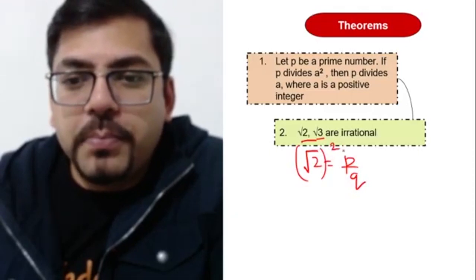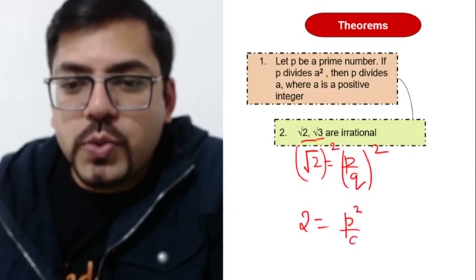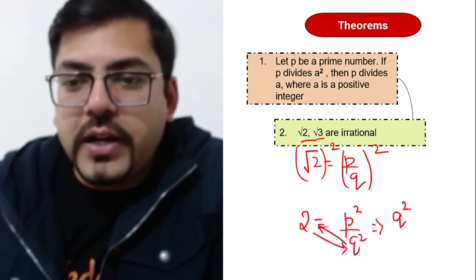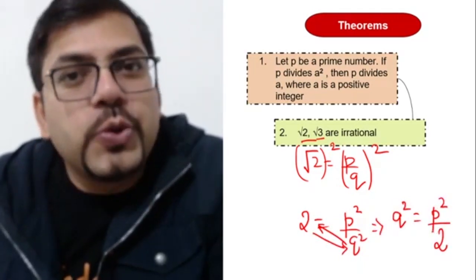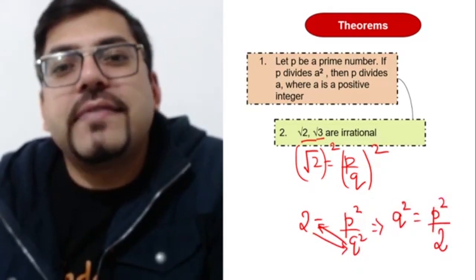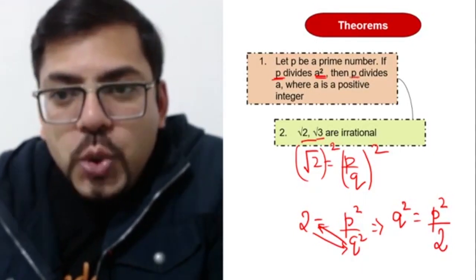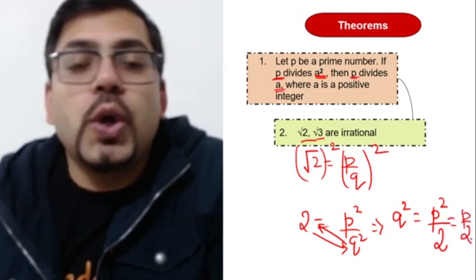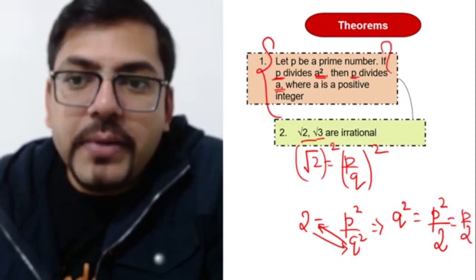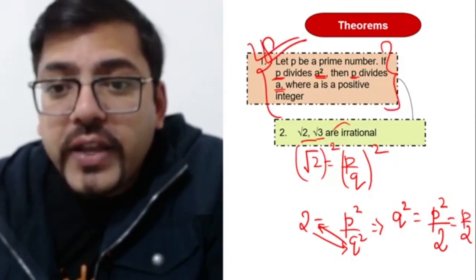Do you remember that we used to write root 2 equals p by q, and then we used to do squaring on both sides. Then we used to write 2 equals p square by q square, and hence we can write q square equals p square by 2. So from here we used to write that p square is divisible by 2. P square is divisible by 2, this means 2 divides p as well - that is, p is divisible by 2 also. So this is fundamental theorem of arithmetic which we use in proving irrational numbers.